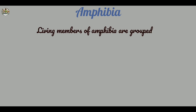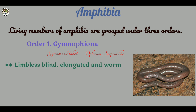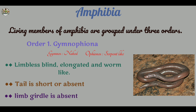Living members of Amphibia are grouped under three orders. Order one: Gymnophiona. 'Gymnos' means naked and 'phionos' means serpent-like. Here are some characters of order Gymnophiona. They are limbless, blind, elongated, and worm-like. The tail is generally short or absent. Limb girdles are absent.